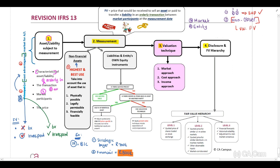The price when we determine the fair value in our principal market should exclude transaction costs and include transport costs. When we determine the price in our most advantageous market, it should include both transaction costs and transport costs.